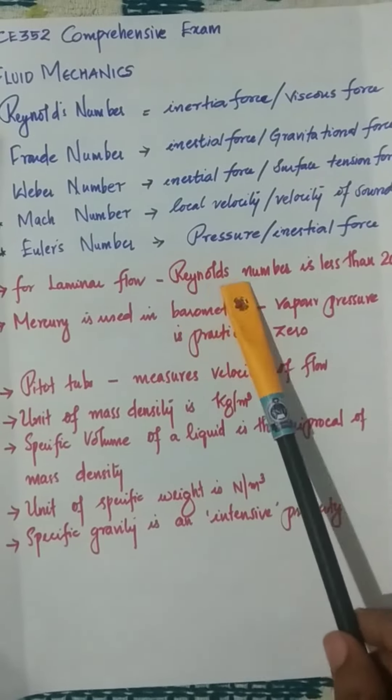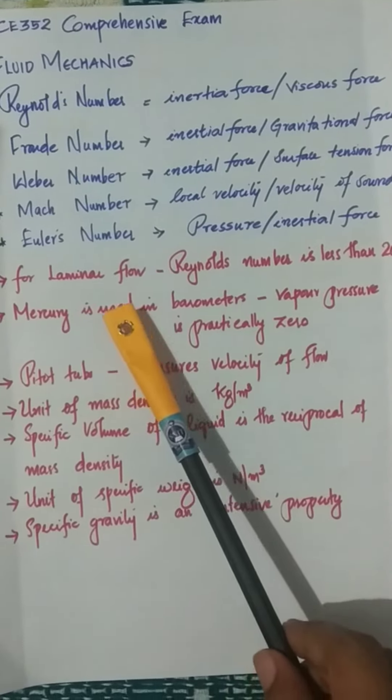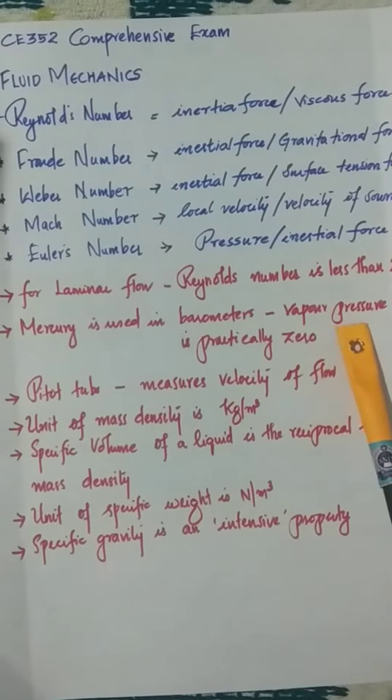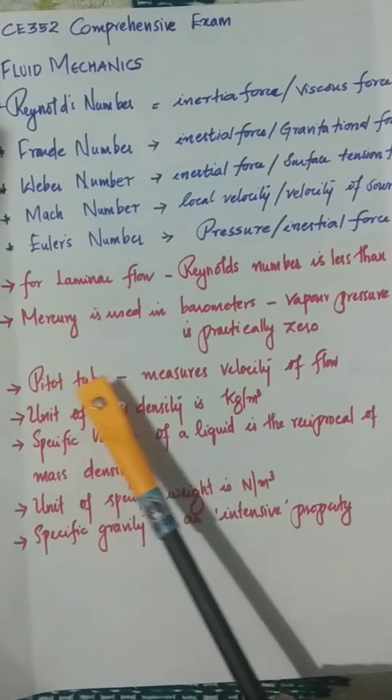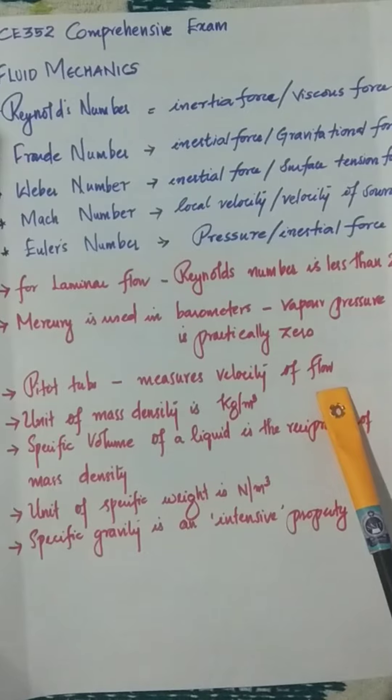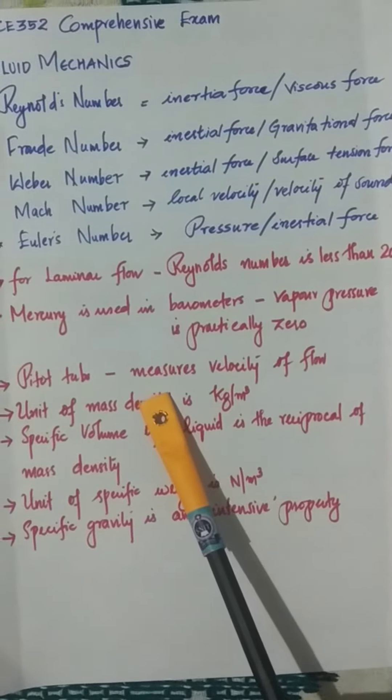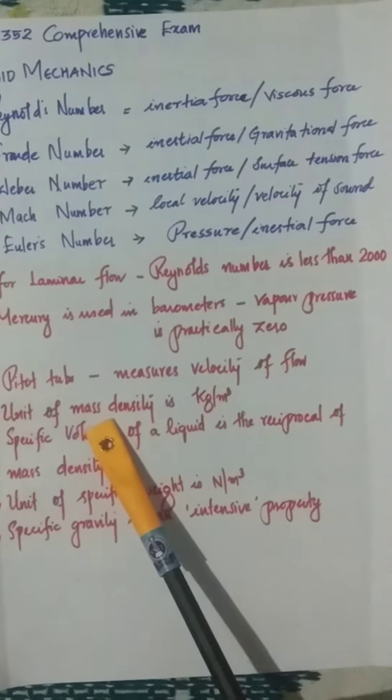Similarly, the next concept is barometer. Barometer is an instrument used to measure what? You need to think about it. Mercury is used in it because the vapor pressure is practically zero. Pitot tube is used to measure the velocity of flow. So what does manometer use for?